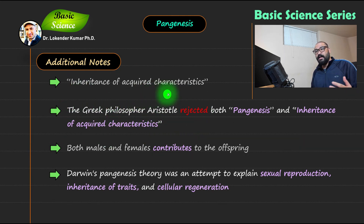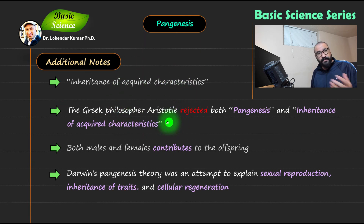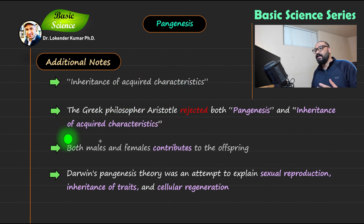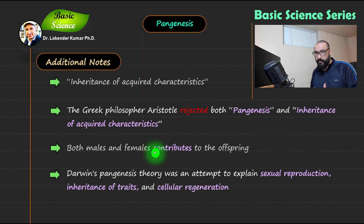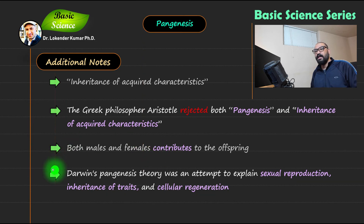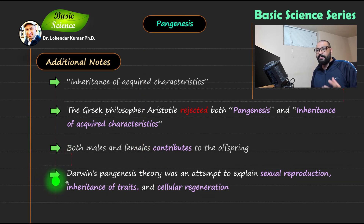This idea of pangenesis and inheritance of acquired characters was rejected by Aristotle, because he was not comfortable with this idea and believed that both males and females contribute to the offspring — which was a very important point.